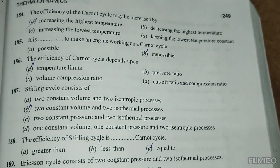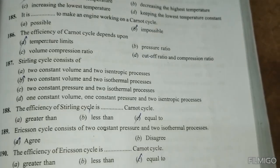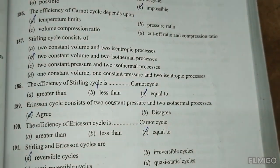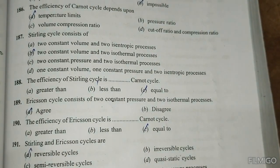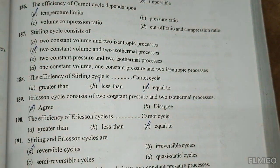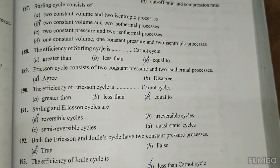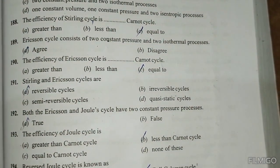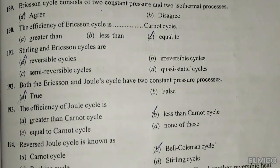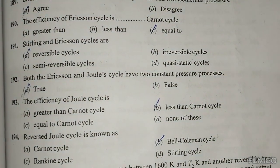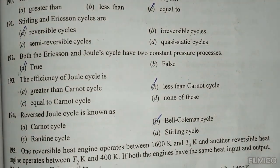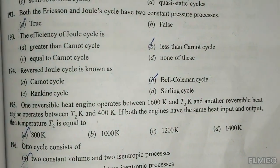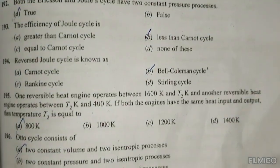The Stirling cycle consists of 2 constant volume and 2 isothermal processes. The efficiency of the Stirling cycle equals that of the Carnot cycle. The Ericsson cycle consists of 2 constant pressure and 2 isothermal processes. The efficiency of the Ericsson cycle equals the Carnot cycle. Stirling and Ericsson cycles are reversible cycles. Both Ericsson and Joule cycles have 2 constant pressure processes. The efficiency of the Joule cycle is less than the Carnot cycle. The reversible cycle is known as the Bell-Coleman cycle.